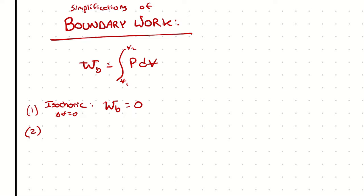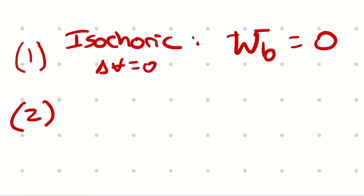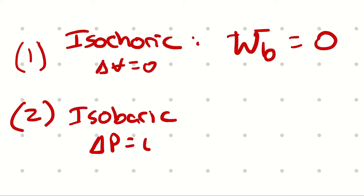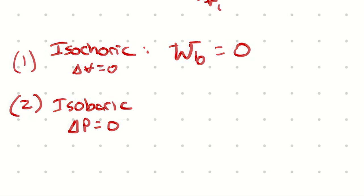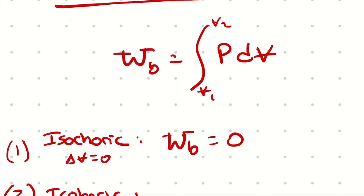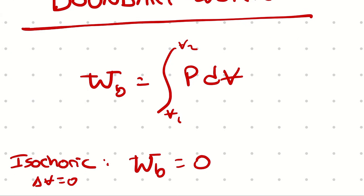Let's make another property constant. What if we were considering an isobaric process instead of isochoric — change in pressure is zero instead of change in volume is zero? Well, if our pressure is constant, it's going to come out of our integral. We're left with pressure times the integral of dV, which is just delta V, which means pressure times V2 minus V1.